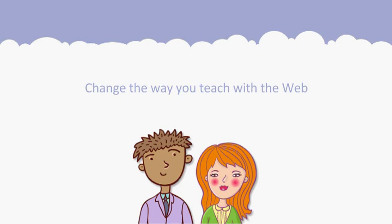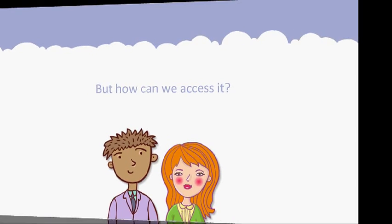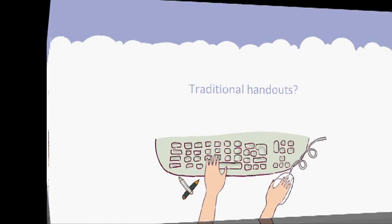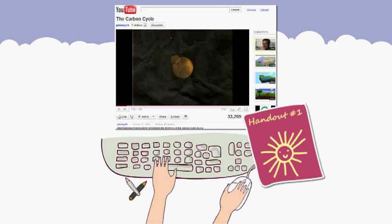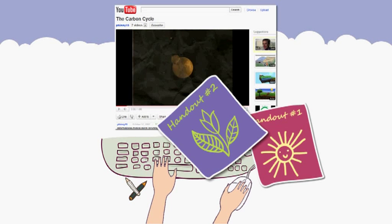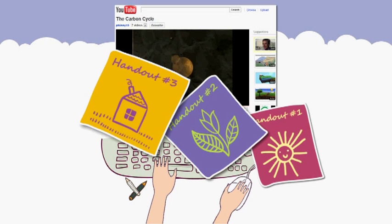Sidevibe will change the way you teach with the web, but teachers are still struggling with how to access this content in meaningful ways. Using traditional handouts for web assignments can create barriers to learning. Students' hands, eyes and minds are constantly switching from screen to paper at a cluttered workspace, breaking focus and the learning experience.